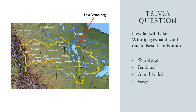With isostatic rebound occurring faster in the northern part of Lake Winnipeg than in the rest of the basin, an interesting question arises: how far south will Lake Winnipeg expand? Will it eventually creep into Winnipeg? Will it cross the border at Pembina? How about Grand Forks or Fargo? Where would you buy beachfront property in expectation of Lake Winnipeg coming south?